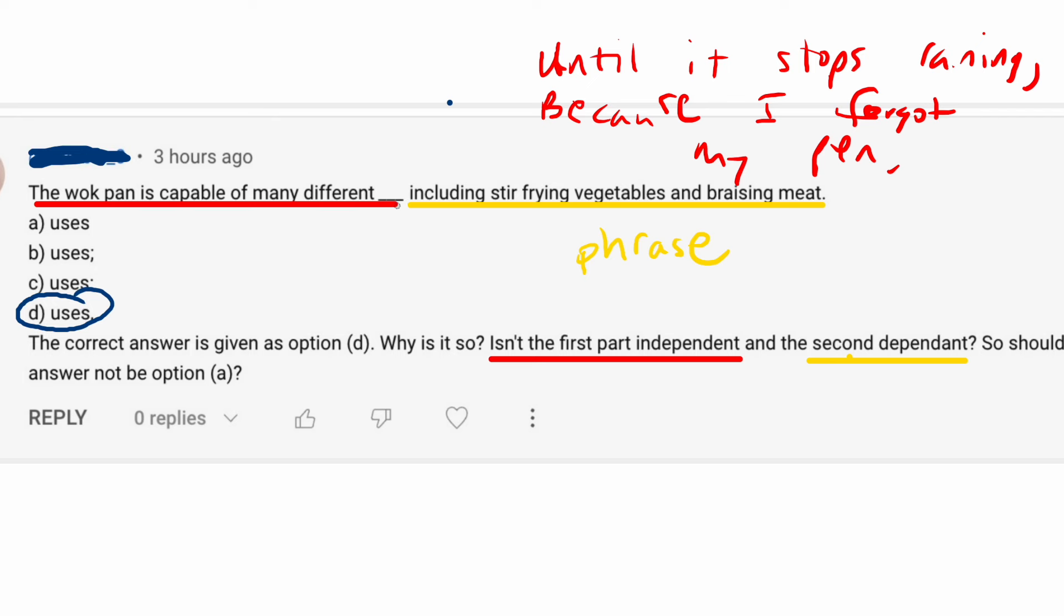In this case, we do need a comma because this phrase is basically serving as a kind of modifier for the word uses. It has many different uses. They could have also said which include stir frying vegetables and braising meat. And I think it would be clear that we definitely do need a comma. And it's the same thing here.